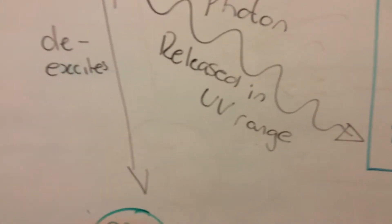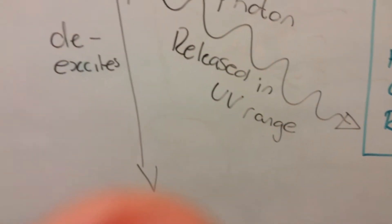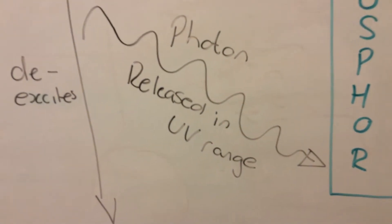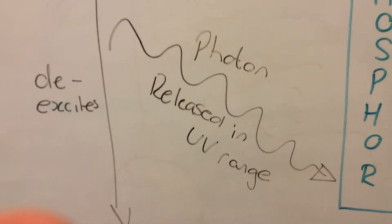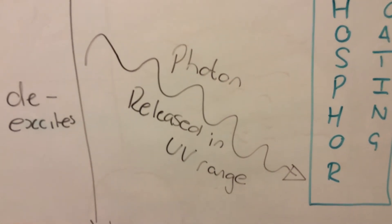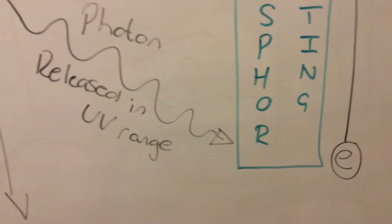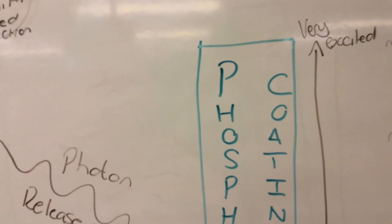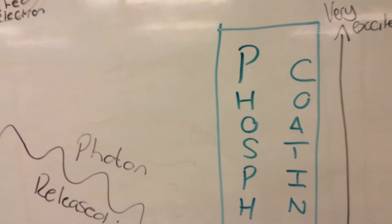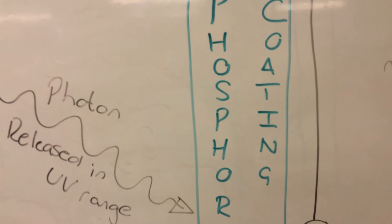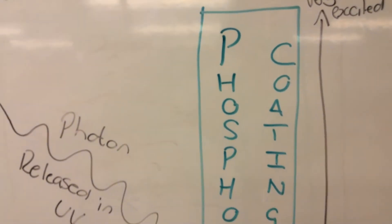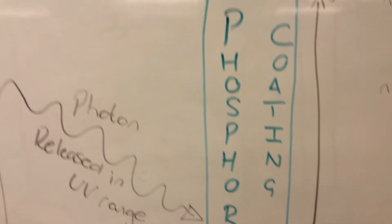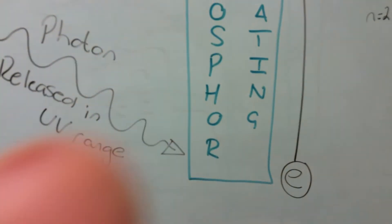So we can't see UV. We can only see, obviously, the visible light section. Very small region of the electromagnetic spectrum. But these photons released in the UV range hit what's on the outside of the fluorescent tube, which is a phosphor coating. And you can tell that that's special because I did that in green pen.